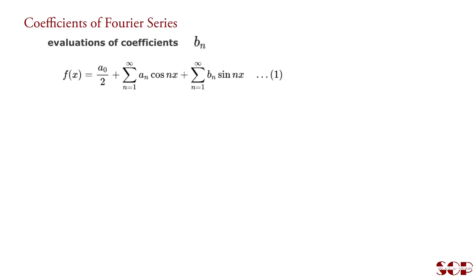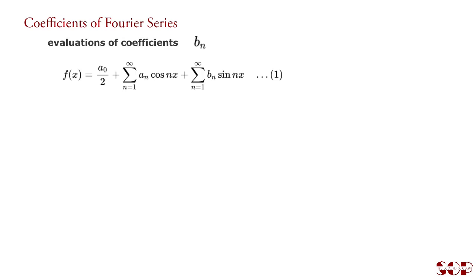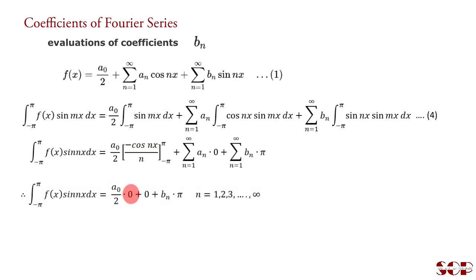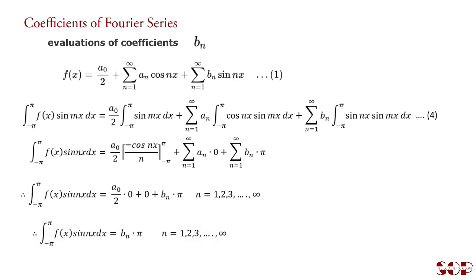For evaluation of Fourier coefficient bₙ, multiply the entire series by sin(mx) and then integrate it from minus pi to pi with respect to x. Taking m equal to n and using standard integrals: the integration of sin(mx) converts to minus cos(nx)/n and ultimately becomes 0. One standard integral equals 0 and another equals pi. Hence the final result is obtained for n equal to 1, 2, 3, and so on, giving us the formula for Fourier coefficient bₙ.